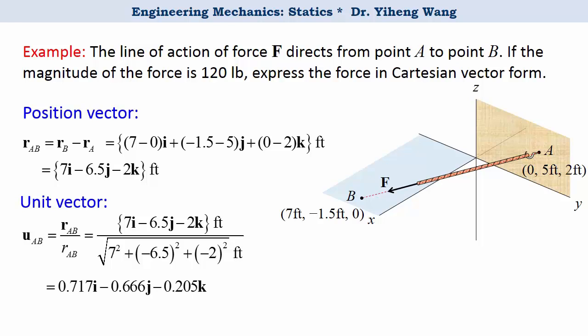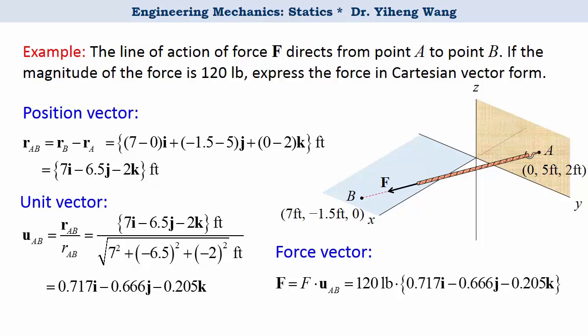And this unit vector is also the unit vector of our force, therefore our force vector is determined by its magnitude multiplied by this unit vector UAB. And this answers this question. Notice that this force vector does have the unit of pound.